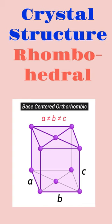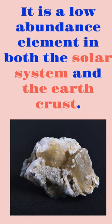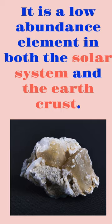It is a low-abundance element in both the solar system and the Earth's crust. Earth's crust contains boron at the rate of 0.00086%. Thank you for watching from TryToBeUseful.